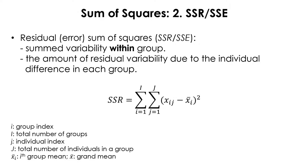Next, you need to calculate the residual sum of squares, or error sum of squares. This is the amount of remaining variability due to individual differences within each group. You subtract each individual's score within the group from the group mean — X-bar sub i — square that deviance, sum across all subjects within the group, then add across all groups to get SSR or SSE.